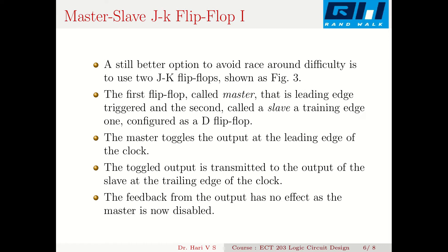A still better option is to use two JK flip-flops: the first acts as a master flip-flop and the second acts as a slave. The master flip-flop is leading edge-triggered, and the second flip-flop, called the slave, is trailing edge-triggered. The slave is configured as a D flip-flop, receiving inputs of 1-0 or 0-1 from the master's outputs.